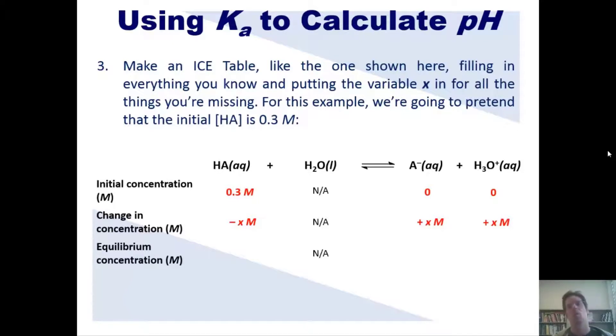Now the final row is, of course, made by just adding up what's present in the first row by what's present in the second row. So my final row, E, is going to have 0.3 minus X molar concentrations of HA. And my individual rows for A-minus and H3O-plus and my equilibrium concentrations for my products are going to be X.